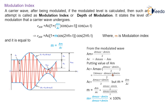So the modulation index m = Am / Ac = [(A_max − A_min) / 2] / [(A_max + A_min) / 2]. Finally, the modulation index value equals (A_max − A_min) / (A_max + A_min).